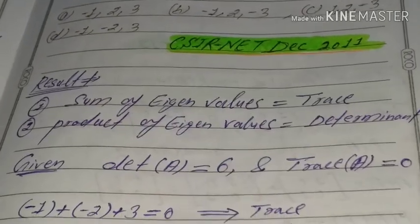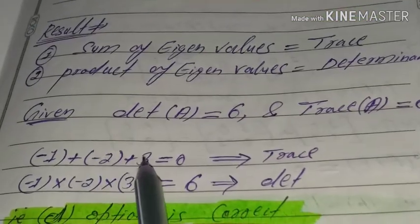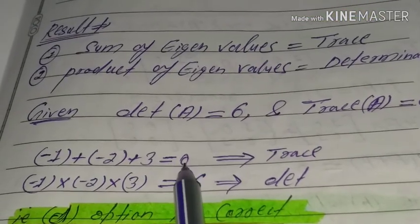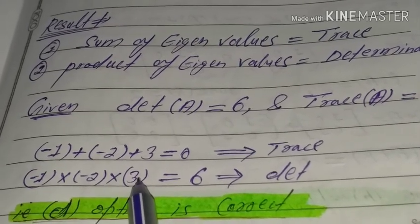For option A, minus 1 plus minus 2 plus 3 is equal to 0 and the product is equal to 6. This determinant is correct, so this is our fourth option correct.